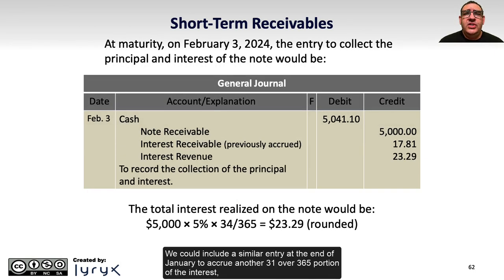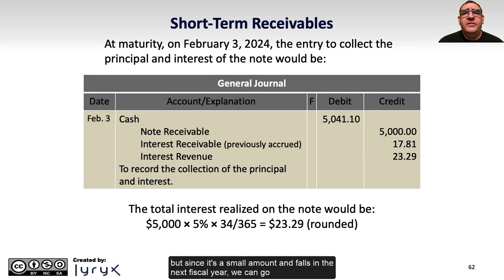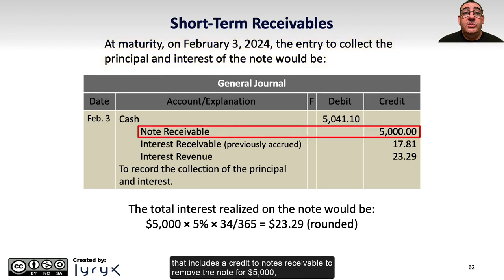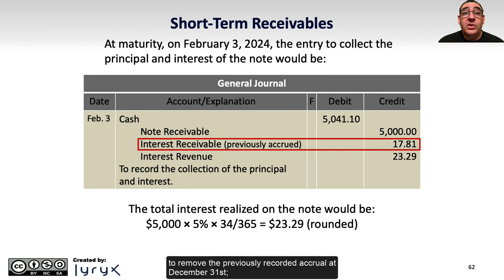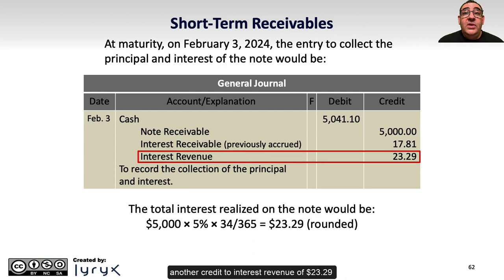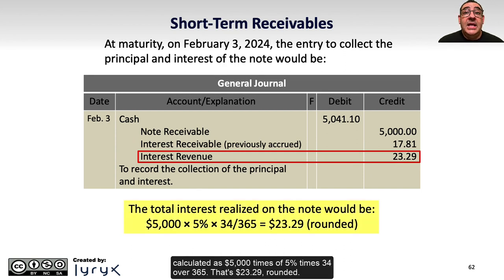We can go straight to February 3rd to record the maturity and collection of the note. The journal entry includes a credit to notes receivable to remove the note for $5,000, a credit to interest receivable for $17.81 to remove the previously recorded December 31st accrual, and another credit to interest revenue of $23.29 for the interest from January 1st to February 3rd — which is 34 days, calculated as $5,000 times 5% times 34 over 365, equaling $23.29 rounded.